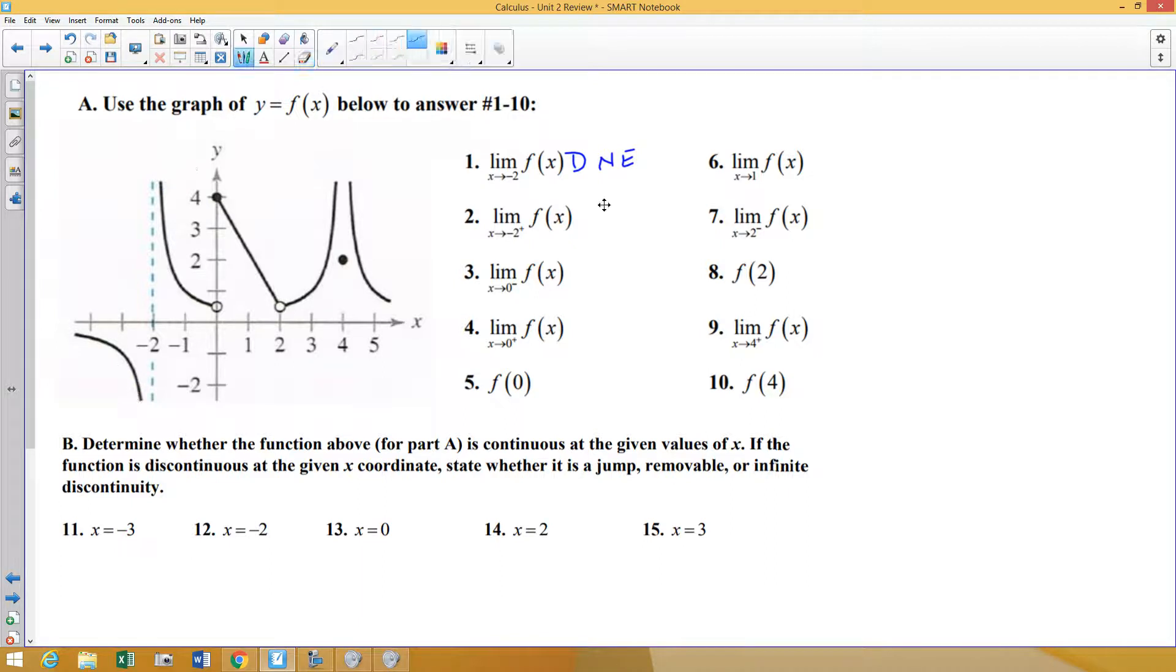Number two, negative 2 from the right. Now we're only looking at the right side. As I approach negative 2, we are going down forever. That means I would prefer you to answer with negative infinity. Technically does not exist is correct, but I do want you to specify with infinities where possible. That is approaching negative infinity.